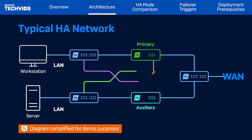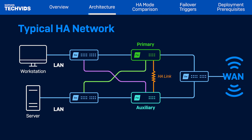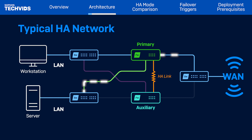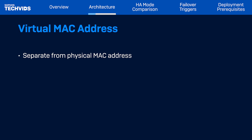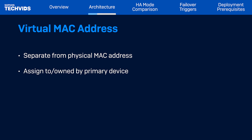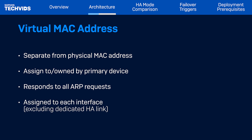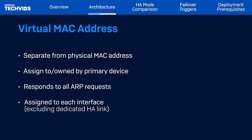Let's examine a typical high availability network. The Sophos Firewalls are configured with mirror connections, providing continuous network protection and preventing a single point of failure. This allows for efficient, continuous access to crucial applications and services. Regardless of the mode, the primary device first processes all packets, because only the primary appliance responds to requests by way of the virtual MAC address. The virtual MAC address is separate from the firewall's physical MAC address — it's assigned to and owned by the primary node and utilized by the HA cluster. It responds to all requests and is assigned to each interface except for the dedicated HA link.